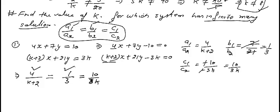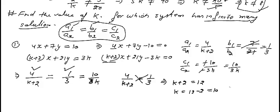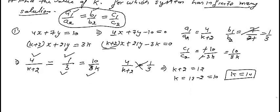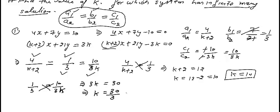For infinite many solutions, all three ratios are equal. Taking A1/A2 equals B1/B2: 4/(K+2) equals 1/3. Cross multiplying: K plus 2 equals 12, so K equals 10. Verifying with B1/B2 equals C1/C2: 1/3 equals 10/3K, cross multiplying gives 3K equals 30, so K equals 10. Same answer confirmed.